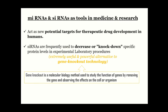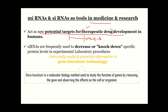MicroRNAs and small interfering RNAs are being used as tools in medicine and research. For example, they can be used as new potential targets for therapeutic drug development in humans. If you want to create a drug targeting a certain pathway — for instance, an mRNA that is producing a protein associated with a disease — you can design a molecule to interfere with it.